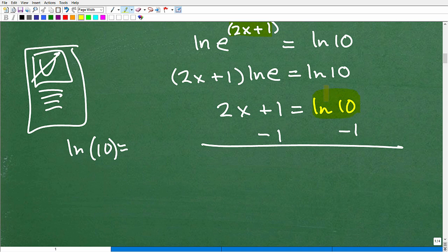All right. Just a reminder, again, this is just a number. So, I'm just kind of computing that number. So, now I've got 2x equals ln 10 minus 1.